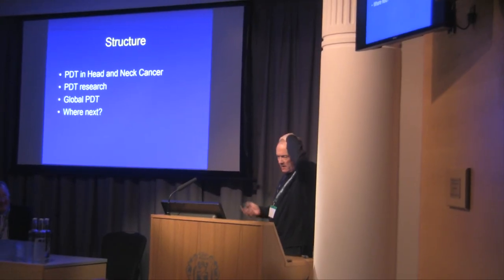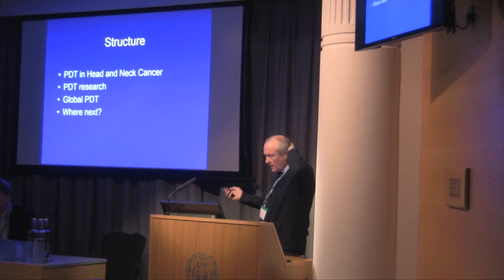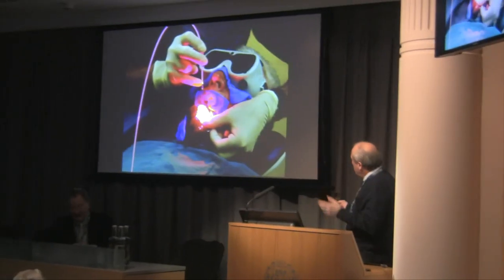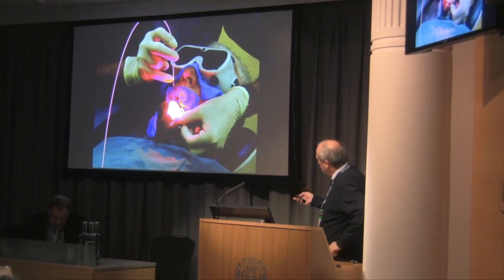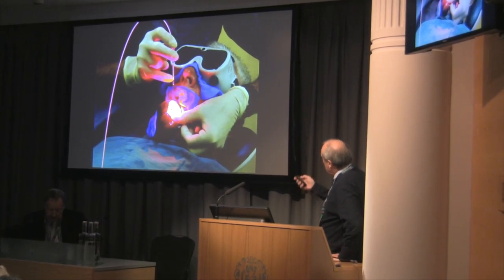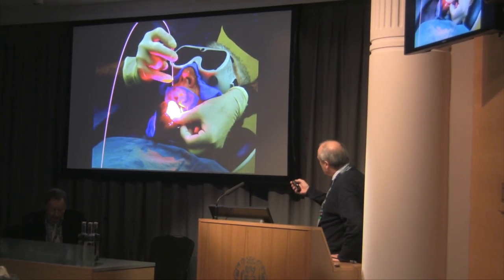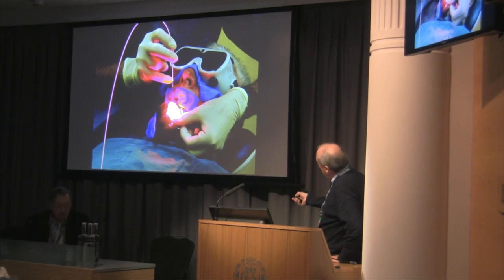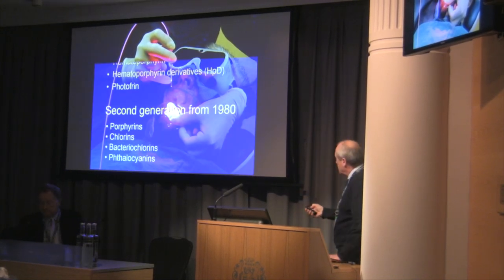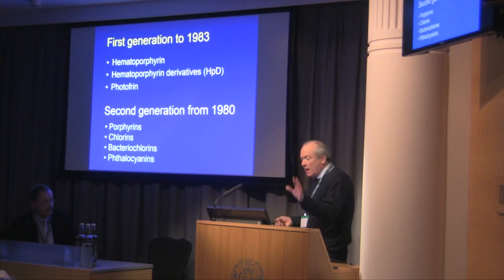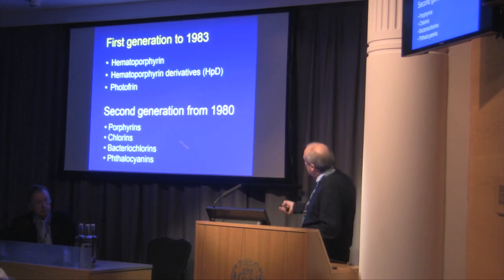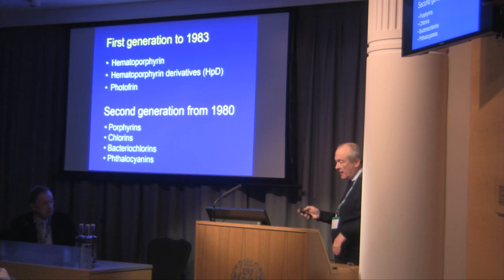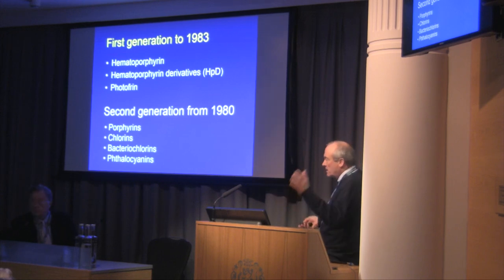I'm going to cover these topics on where we're at in PDT. First, talking about surface illumination, which most people refer to in PDT. This is the sort of setup: you have a microlens delivering light to a target with shielding of the normal tissues. The drugs in use include first generation drugs still around — Photofrin — and lots of other second generation drugs from the 80s. So this is established technology of 30, 40 years.